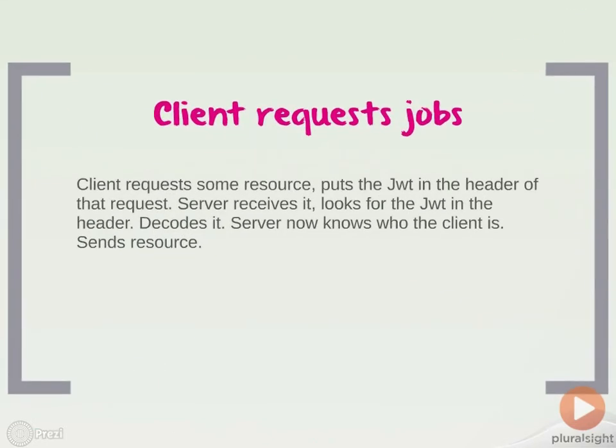What if a client wants to request a restricted resource, such as, in our example, jobs? Jobs can only be accessed if you are authenticated. So to make that work, what we do is on the frontend with Angular, we take our JWT from our local storage and embed it into an authentication header, which then gets passed back with any sort of request we make to our backend for a resource. That way, our backend knows who we are from the payload, since our user ID is in it, and can authorize us to have access to this resource.